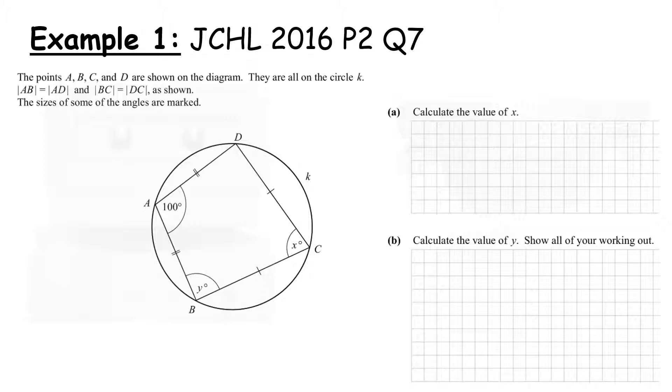Now let's take a look at an example. The points A, B, C, and D are shown on the diagram. They are all on the circle K. AB is equal to AD, and the length of BC is equal to the length of DC as shown. The sizes of some of the angles are marked. We have 100 degrees at A, then X at C and Y at B. Calculate the value of X. The first thing to notice is we have a cyclic quadrilateral, which is a four-sided shape within the circle where all vertices touch or sit on the circle. Therefore, I know that opposite angles in a cyclic quadrilateral must add to give me 180 degrees, which gives me X must be 80 degrees.